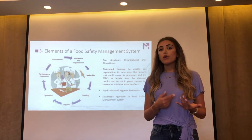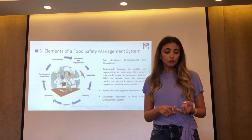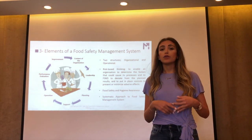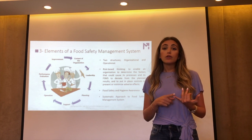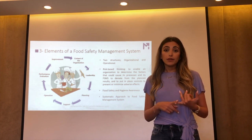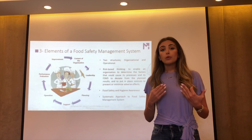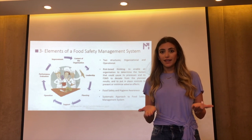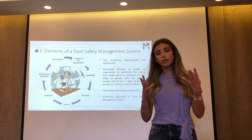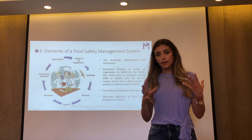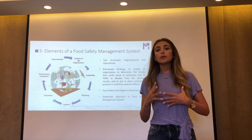This monitoring can be done through qualitative and quantitative analysis. The standard requires defining documentary records to document the root cause analysis, corrections, and corrective actions in order to prevent the reoccurrence of food safety incidents. This was a brief description of the main elements of the food safety management system — of course, they should be customized per company.